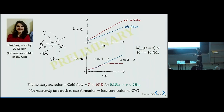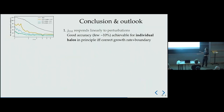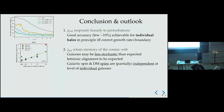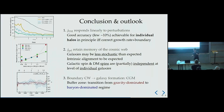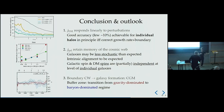To conclude: dark matter angular momentum responds linearly to perturbations — it is not chaotic. Galaxy angular momentum retains some memory of the cosmic web, so galaxies may be less stochastic than expected. And if we want to improve our understanding of the coupling between the cosmic web and galaxy formation, the key transition zone is the CGM — roughly one third of the virial radius — where we switch from a gravity-dominated regime to a baryon-dominated regime with much more complicated interactions.